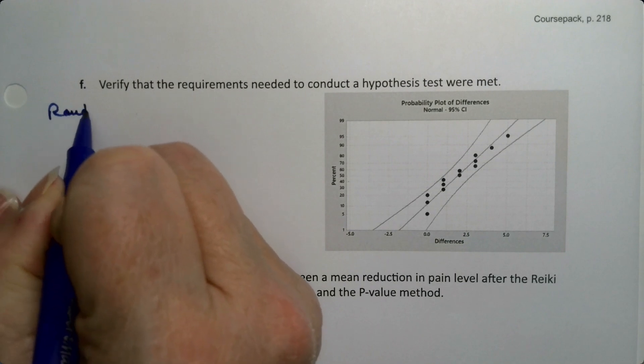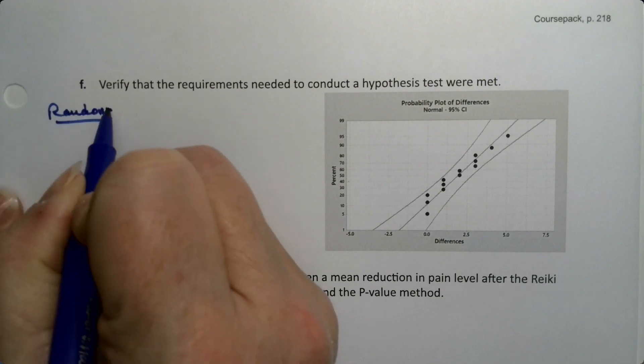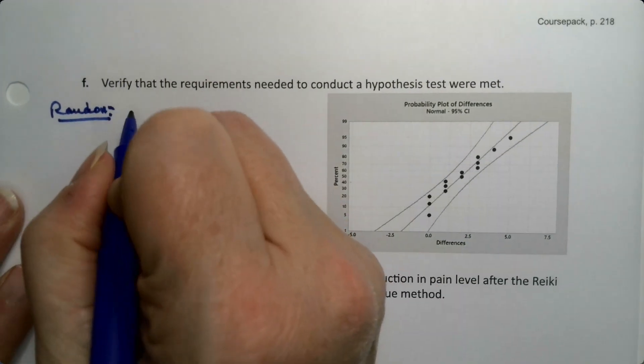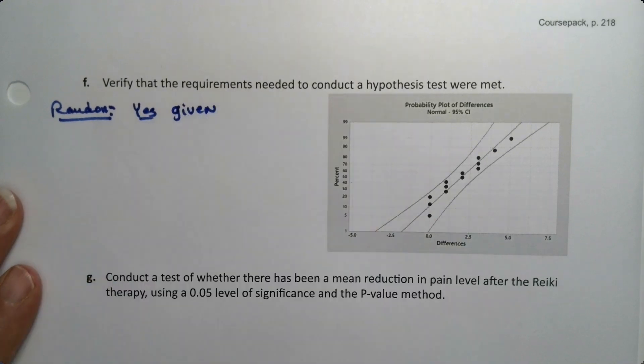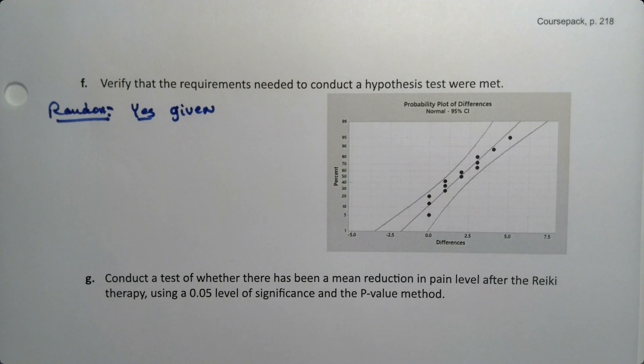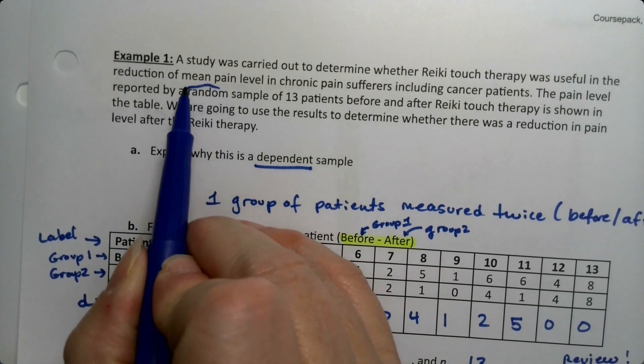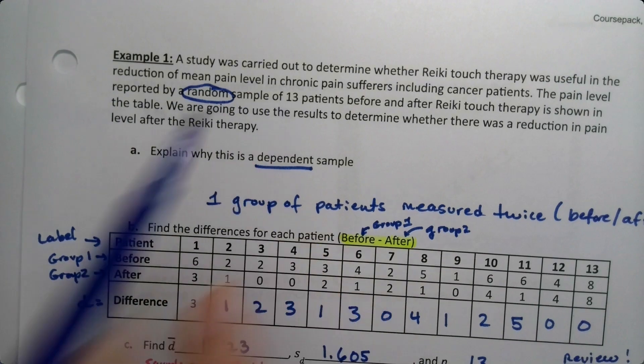Random is easy because random was given. It said it was a random group of patients. It's written right in the problem - random sample of 13 patients. So we're good there.